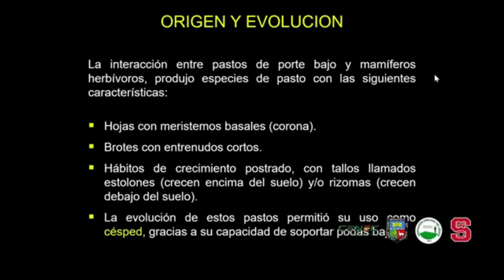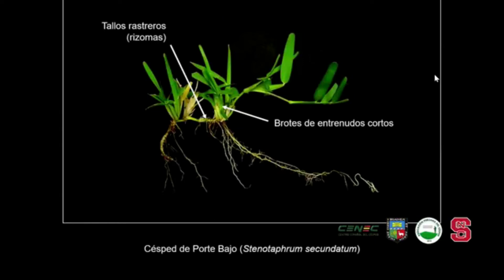La interacción entre los pastos de porte bajo y los mamíferos herbívoros produjo un tipo de pasto con características especiales: hojas con yemas basales gracias a la corona, brotes con entrenudos cortos, hábitos de crecimiento postrado con tallos llamados estolones que crecen por encima del suelo, y rizomas que crecen debajo del suelo. La evolución de estos pastos permitió el uso como césped gracias a su capacidad de soportar podas bajas. Un ejemplo es el Stenotaphrum secundatum, conocido en el Perú como grama americana, que tiene tallos rastreros y brotes de entrenudos muy cortos.